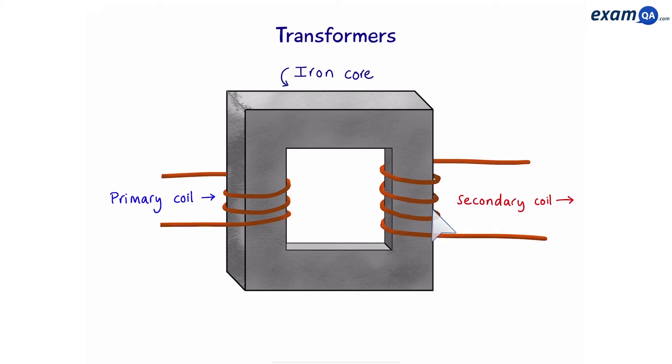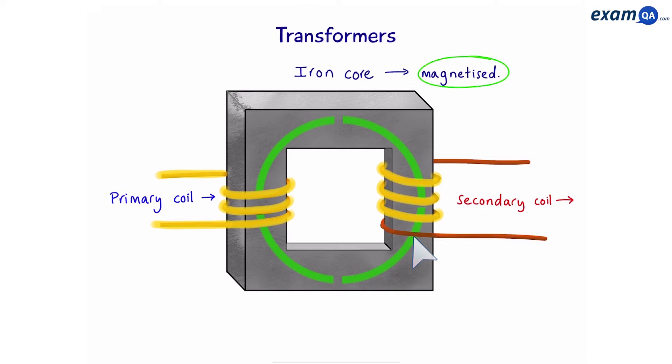So how does it work? Well, the iron core is used because it's magnetized. So as soon as electricity comes in from the first coil, this magnetizes the iron core, which creates a magnetic field inside the iron core. This magnetic field then passes through the second coil, which creates a current in the second coil.